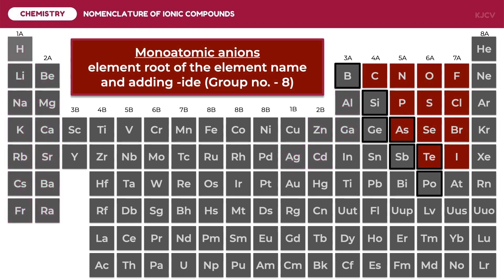The periodic table also helps us in identifying anions. Highlighted in the table are the common monoatomic anions. In naming ionic compounds with monoatomic anions, we use the root word of the anion and attach the suffix "-ide". For example, for oxygen, its root word is "oxy", and attaching the suffix "-ide" gives us the ionic name "oxide". The charges for monoatomic anions are also determined using their group numbers. However, for anions, we subtract 8 from the group number. For example, all monoatomic anions under group 6 will have a charge of negative 2 because 6 minus 8 equals negative 2.